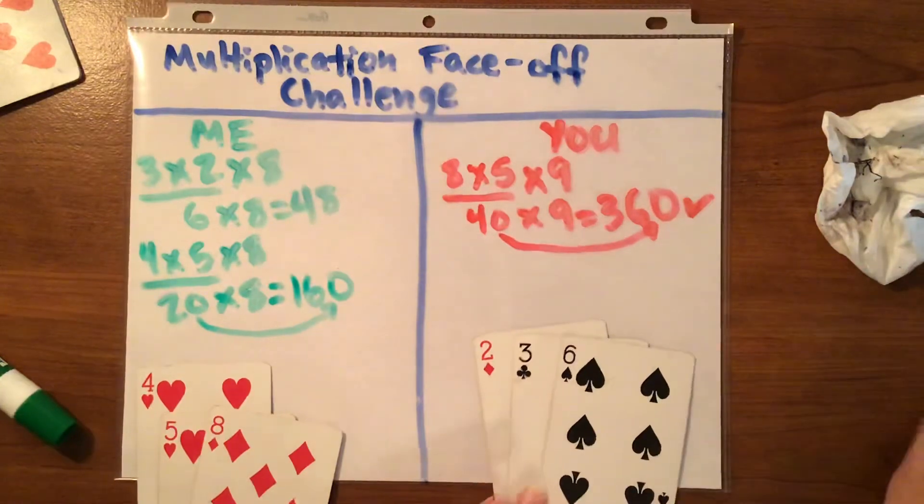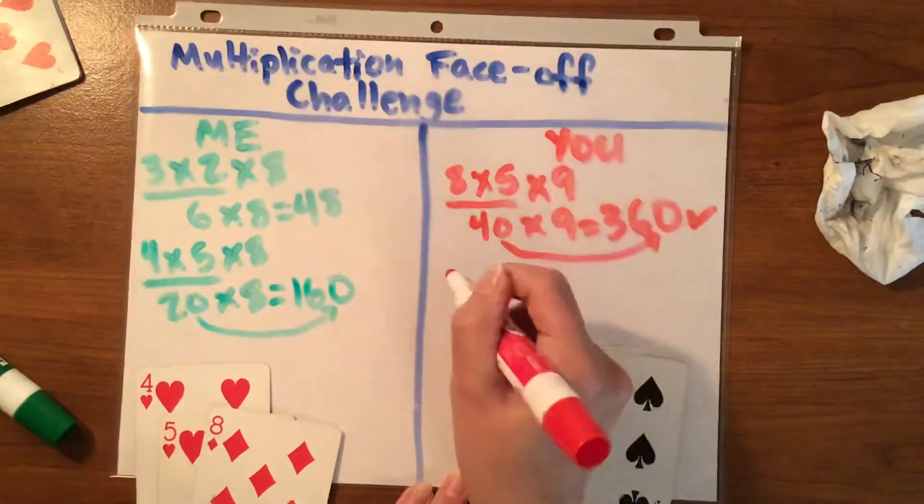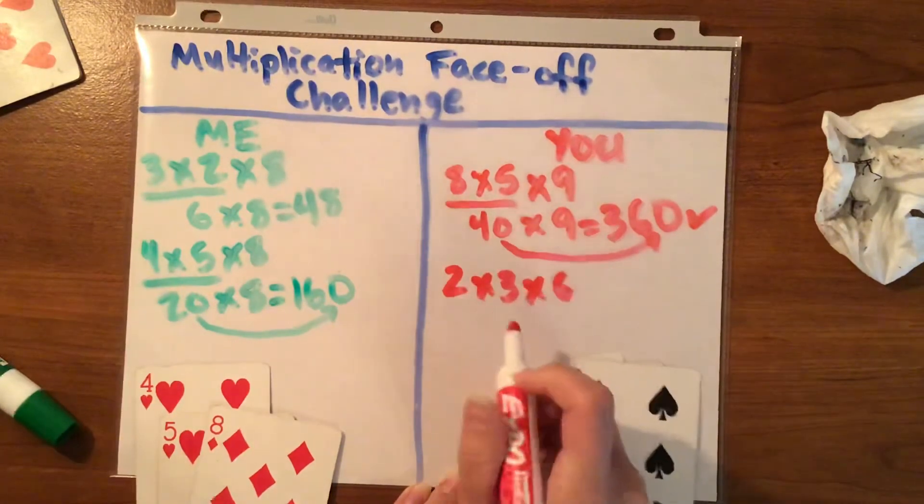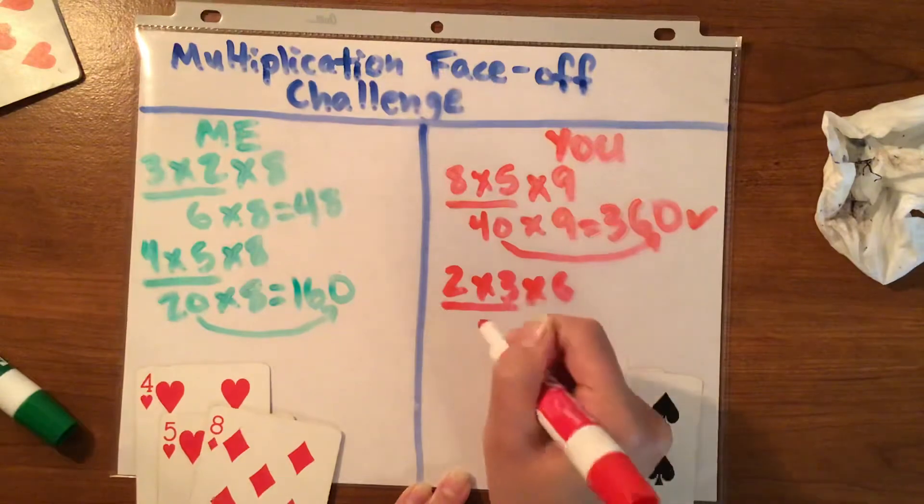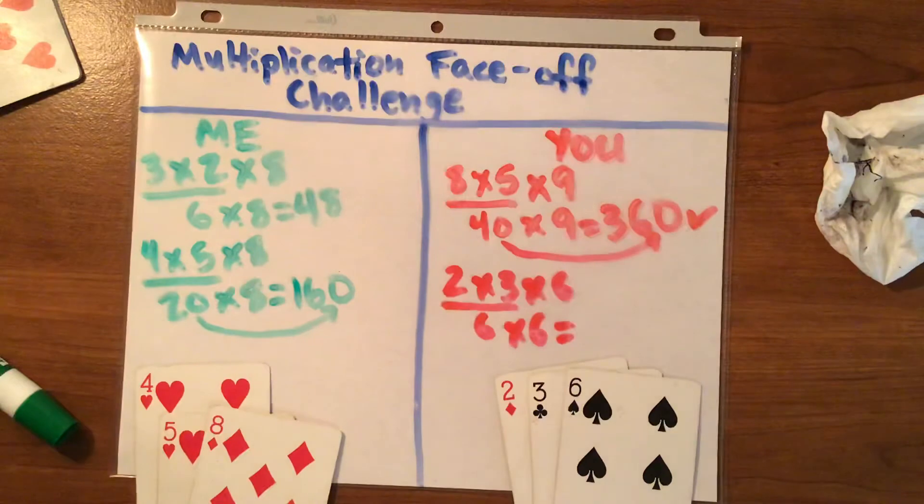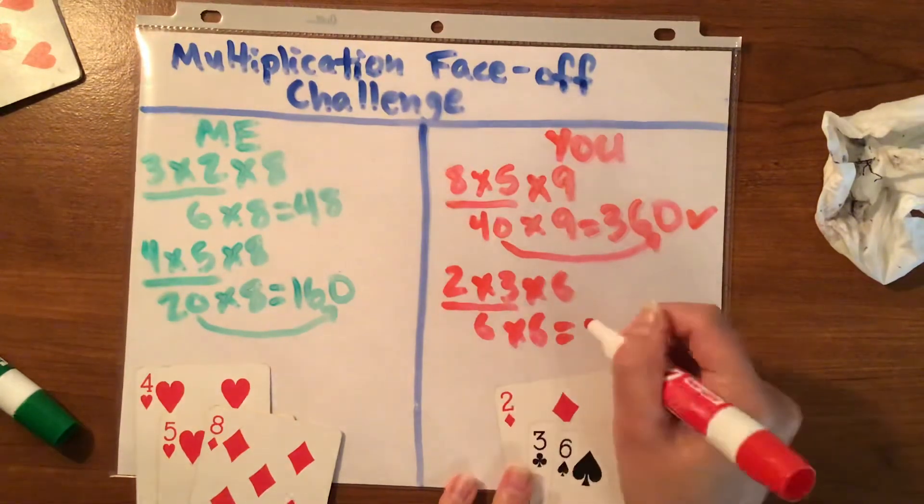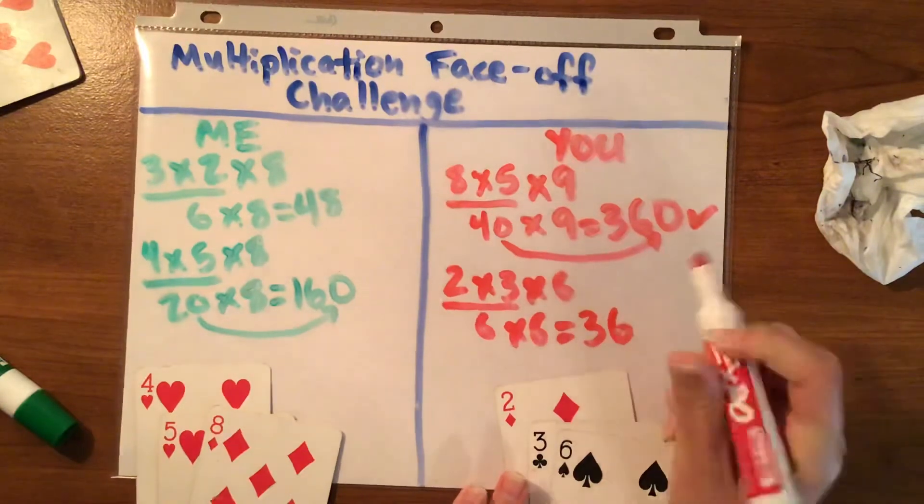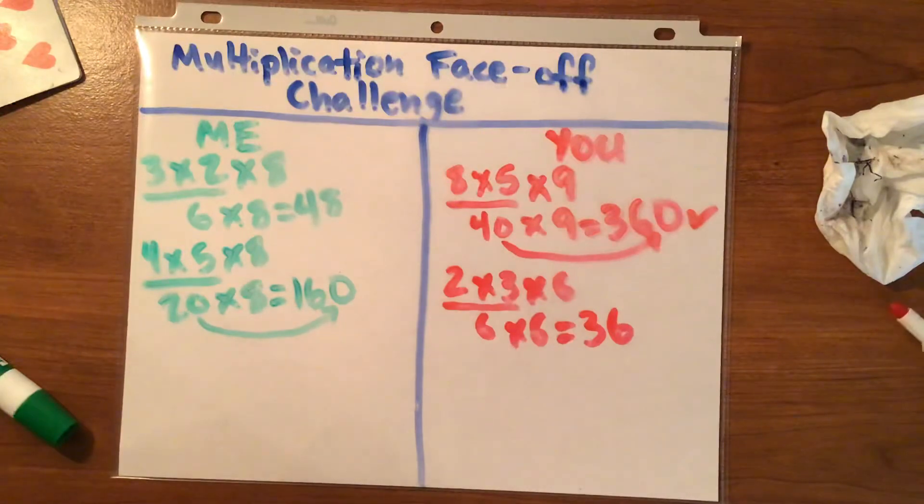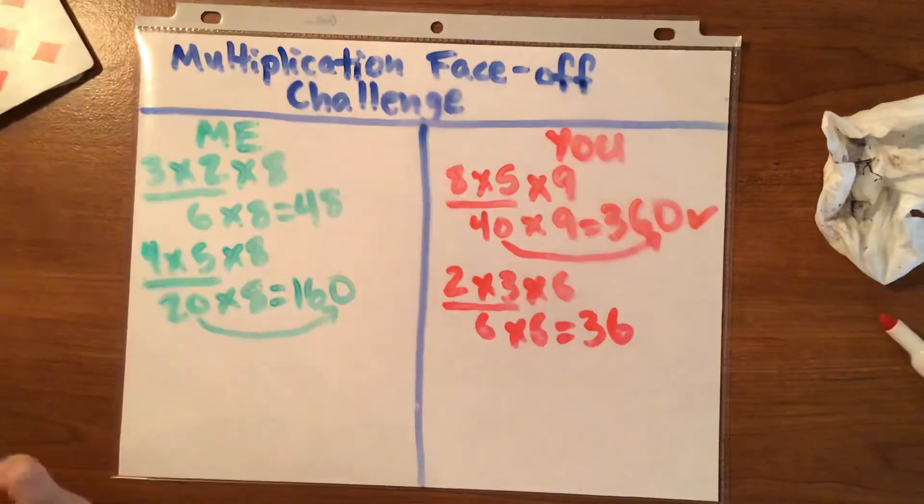Two, three, and a six. This one's pretty easy. I would keep it in the order it is. Two times three times six. Two times three is six. And six times six is thirty-six. Six times six is thirty-six. Six times six is thirty-six. It's just a rhyme me and my students do together. So, who had the larger product? I had the larger product. So, I would get the point that time.